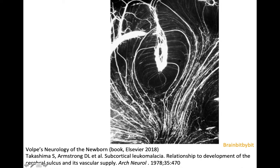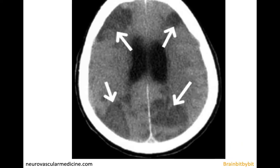As cells get deeper and deeper, the cortex still needs blood supply. The blood supply comes from the meningeal arteries, which run perpendicular to the surface. In the depth of the sulcus, the artery has to make an acute angle, making it more difficult to perfuse that area. This is illustrated by a microangiography of a post-mortem neonate, showing that this is a relatively avascular region.